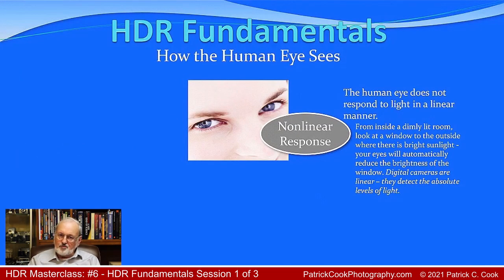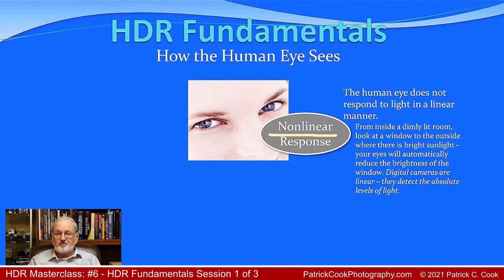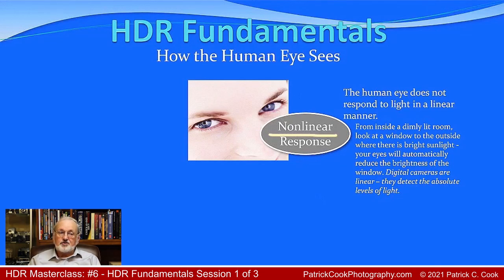Your human visual system is actually non-linear, which basically means it will accommodate the different light levels within the scene. There's a lot of interpretation occurring within your brain so that the various light levels are handled in a non-absolute manner.